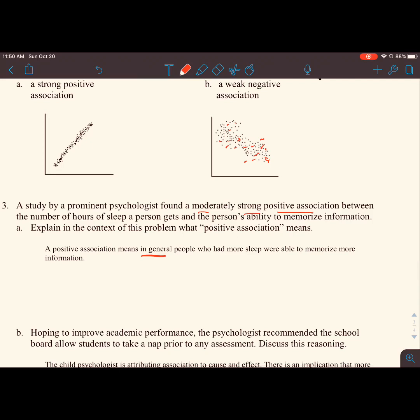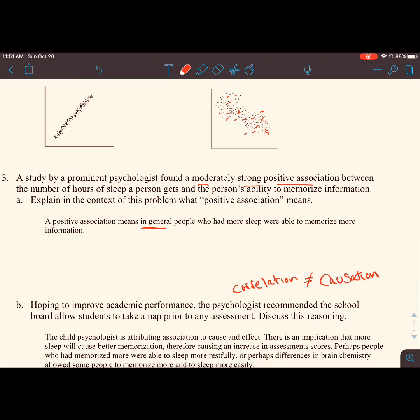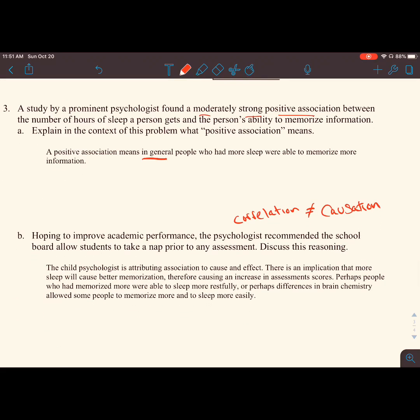Hoping to improve academic performance, the psychologist recommended the school board allow students to take a nap prior to any assessment. If they see there's an association, a strong positive association, it's easy to make a recommendation that if we just want them to do better, we give them more sleep. But I want you to think: correlation does not equal causation. Just because someone gets more sleep does not mean that they will do better or be able to memorize more. It's attributing association to cause and effect. We do not do that.